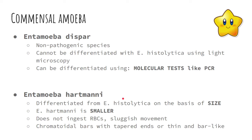Another commensal is Entamoeba hartmanni. It resembles E. histolytica, but is differentiated by its smaller size. It does not ingest RBCs and has sluggish movement. Its chromatoid bars have tapered ends or thin end bar lines — different from E. histolytica's cigar-shaped bars.